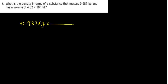For the next problem: what is the density in grams per milliliter of a substance that has a mass of 0.987 kg and a volume of 4.52 times 10 to the power 2 milliliters? We want the answer in grams per milliliter, so I'll first convert the mass. I'll take 0.987 kg, put kg down and grams on top. In one kg we have 1000 grams, so the kg cancels with kg.